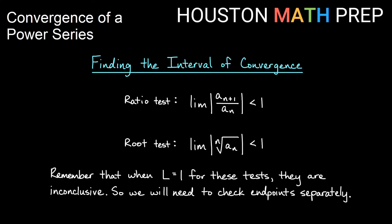We mentioned you'll need to check the endpoints of your intervals. On the ratio test and root test, remember when we get a limit that is exactly 1, that test is inconclusive. So when we take the absolute value and get a limit of exactly 1, we will actually need to plug in those endpoint values to see if we get convergence or not.